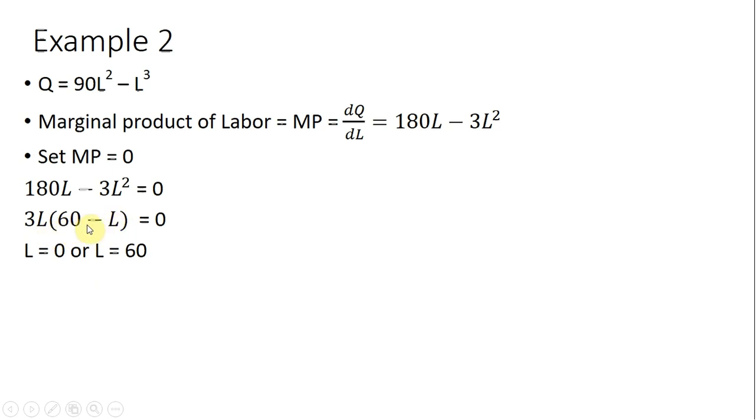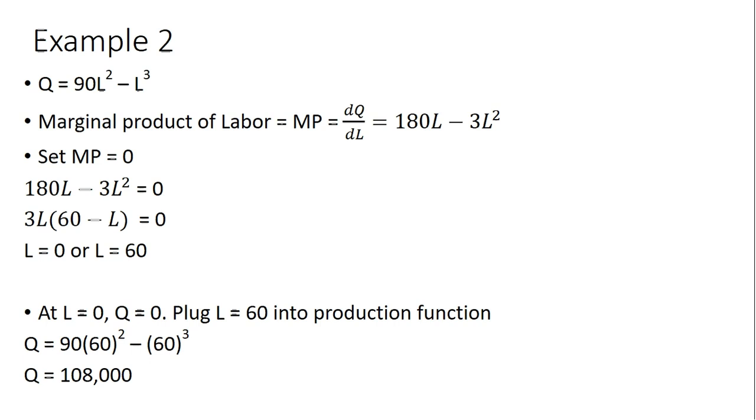So 3L times zero is just zero. So our critical values here are L equals 0, L equals 60. You'll note at L equals 0, output will also be zero, just plugging L equals 0 into the production function here. We get output of zero, so when L equals 0, output is, in fact, minimized.